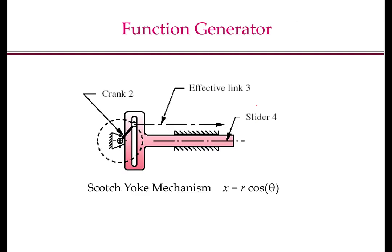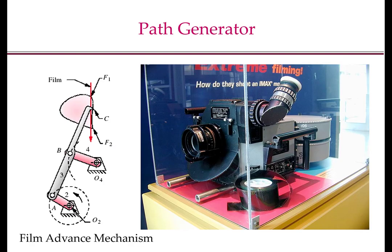Another example of a function generator is the Scotch-Yoke mechanism. This is a mechanism which produces an exact simple harmonic motion of the output slider. Theta is the angle of rotation of the crank, and X is the displacement of the slider. In this mechanism, there are three links: the ground is link 1, the crank is link 2, and the slider is link 3. There are two 1-degree-of-freedom joints — the prismatic joint and the revolute joint — so J1 equals 2. And there is one 2-degree-of-freedom joint, the pin-in-slot joint, so J2 equals 1. Using Grübler's equation, you can see that this is a 1-degree-of-freedom mechanism, and the input degree of freedom is the crank, which controls the output motion of the slider.